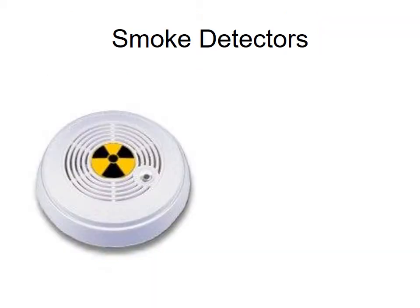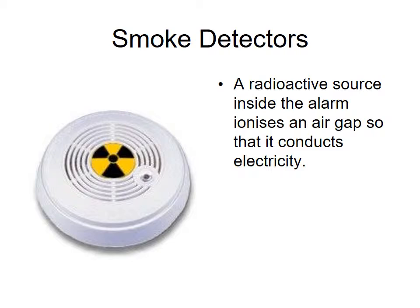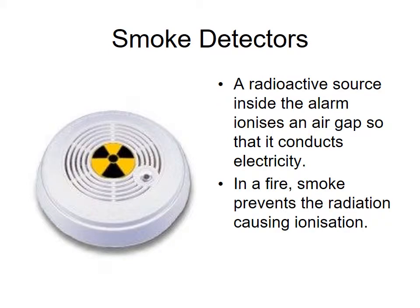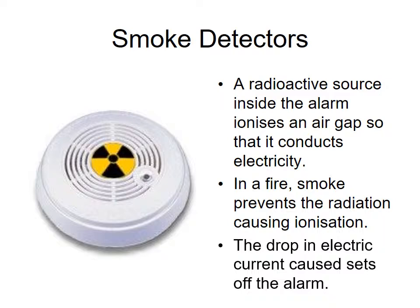A smoke detector is another example of using radiation. A radioactive source in the alarm ionises the air gap around it, so it conducts electricity, forming an electrical current. In a fire, the smoke prevents the radiation from causing ionisation, because the air gap is now full of particles which stop the radiation ionising and getting through.